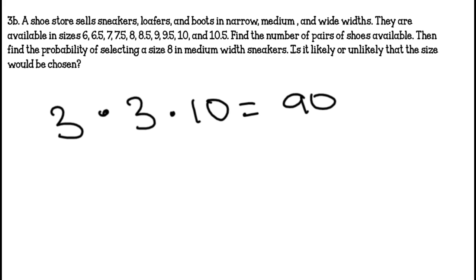Then find the probability of selecting a size 8 in medium width sneakers. Is it likely or unlikely that the size would be chosen? So there would only be one combo, so it would be 1/90. And is that likely or unlikely to happen? There would be one that is pretty unlikely for that shoe to be bought on the first pick.